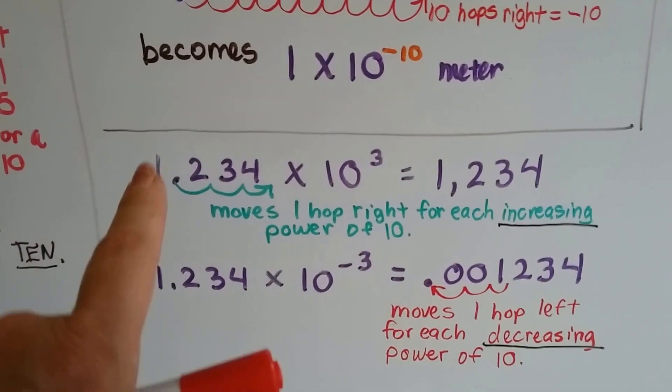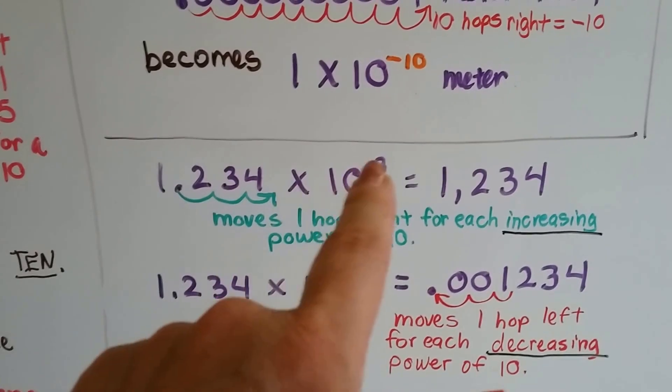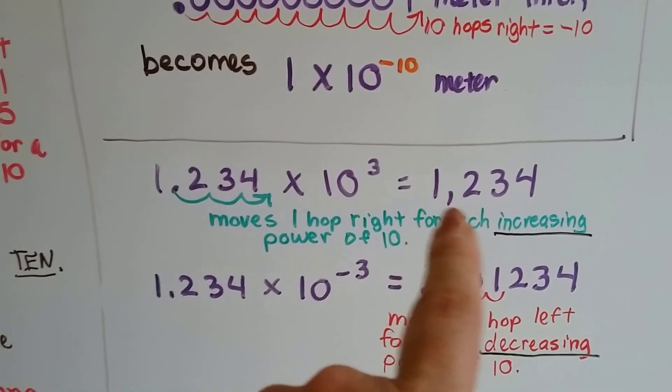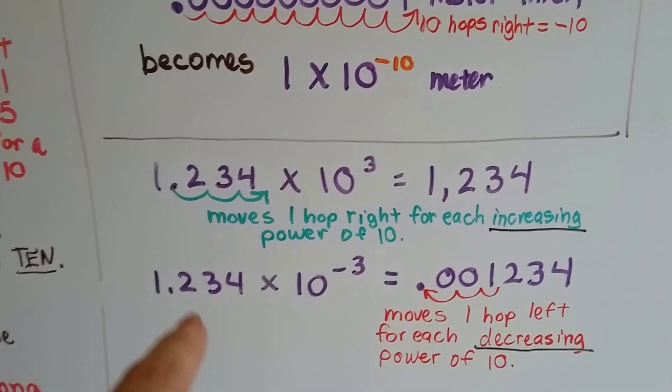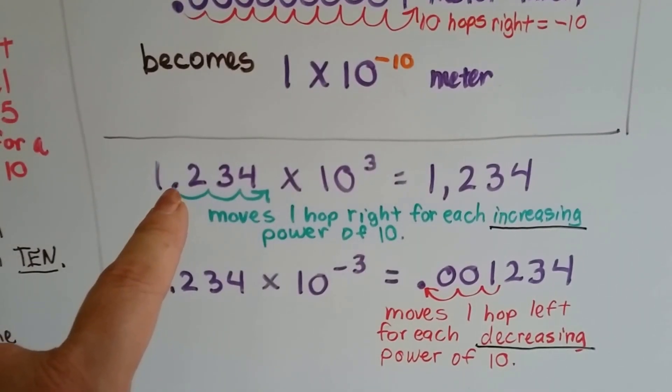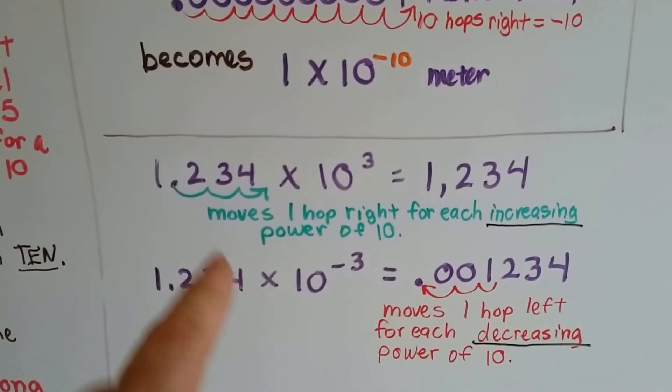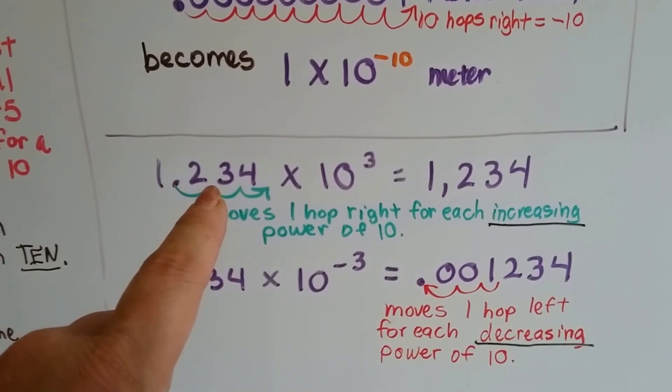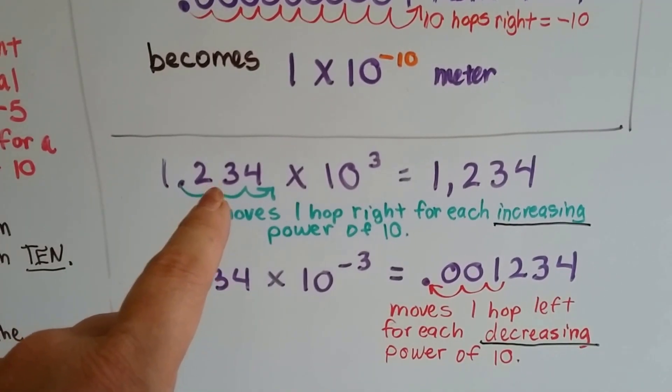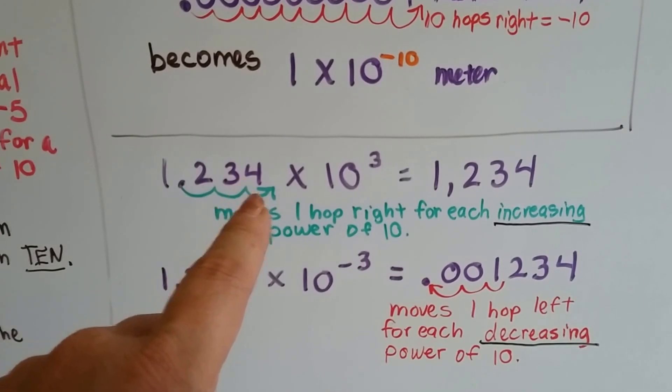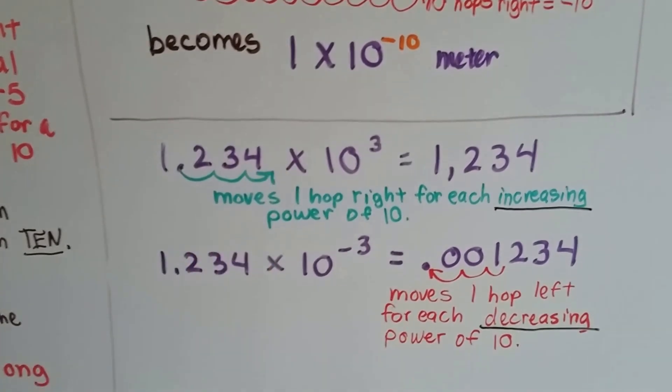We learned in the last video that if we have 1.234 times 10 to the third power, it's going to equal 1,234. Well, every time that decimal moves one hop to the right, it's going to increase the power of 10. If we move it in between here, it's going to be 10 to the first power. In between here, it's 10 to the second power, and behind the fourth, it's 10 to the third power.